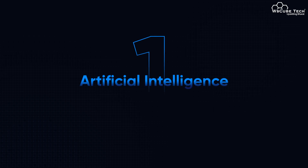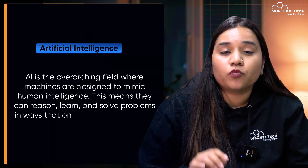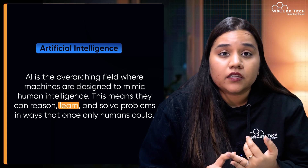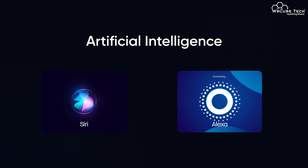Let's talk about artificial intelligence. AI is an overarching field where machines are designed to mimic human intelligence — they can reason, learn, and solve problems in ways that only humans can. For example, voice assistants like Siri or Alexa understand your voice commands and help you with tasks. AI is basically a broad concept that includes everything from simple rule-based systems to the most advanced neural networks.